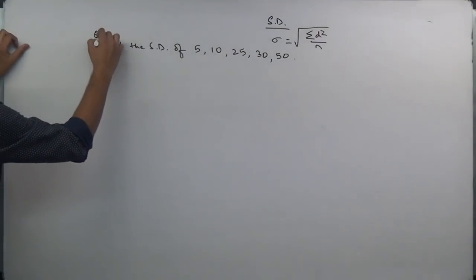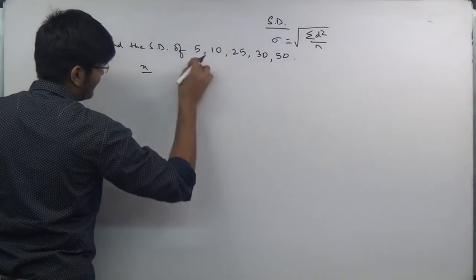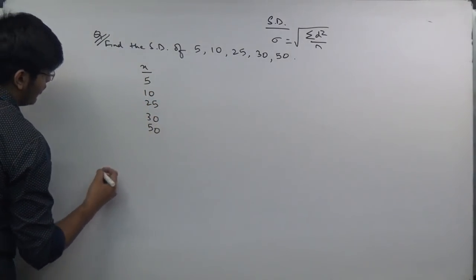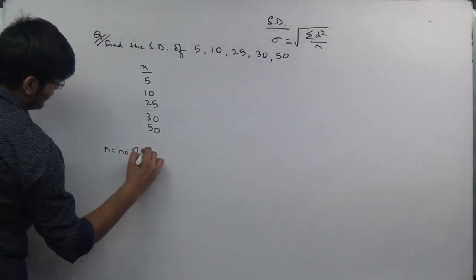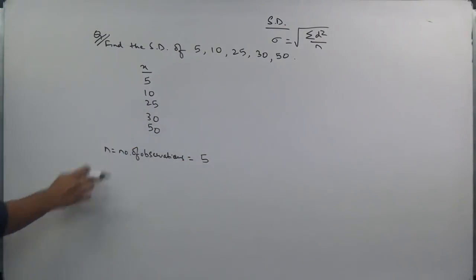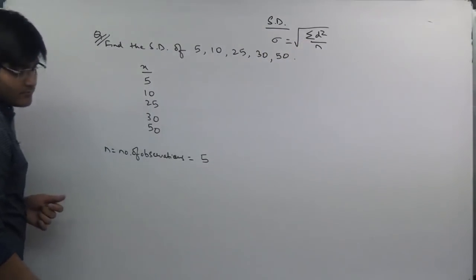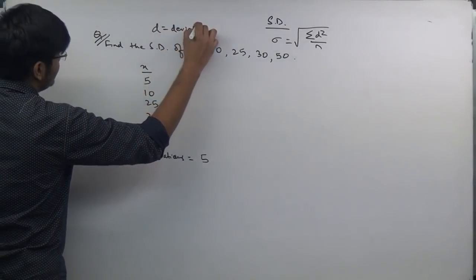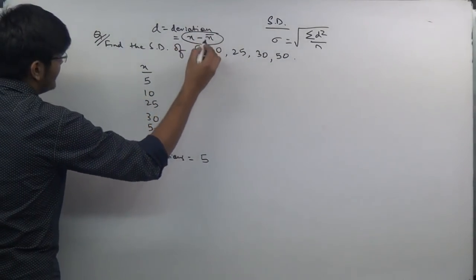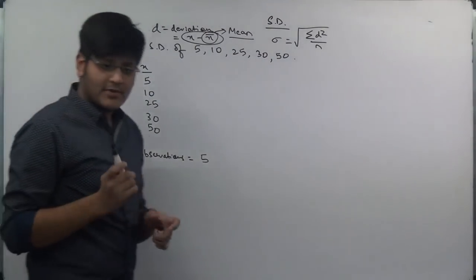The best way to solve a statistical problem is in tabular format. We create a table with the series: 5, 10, 25, 30, 50. Here n equals the number of observations, which is 5. We need column d, where d = x − x̄ (x minus x-bar). Here x-bar is the mean of the series.